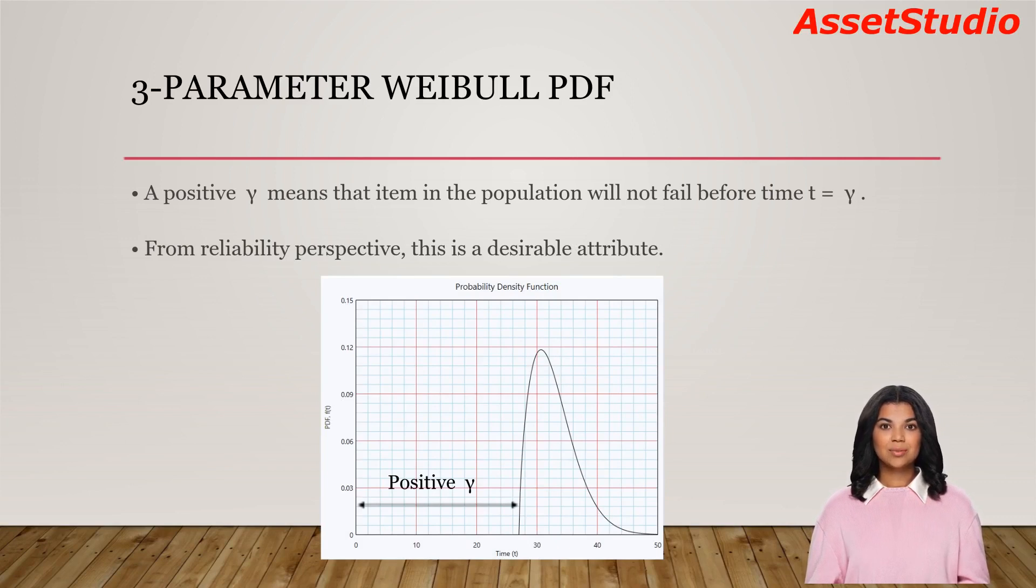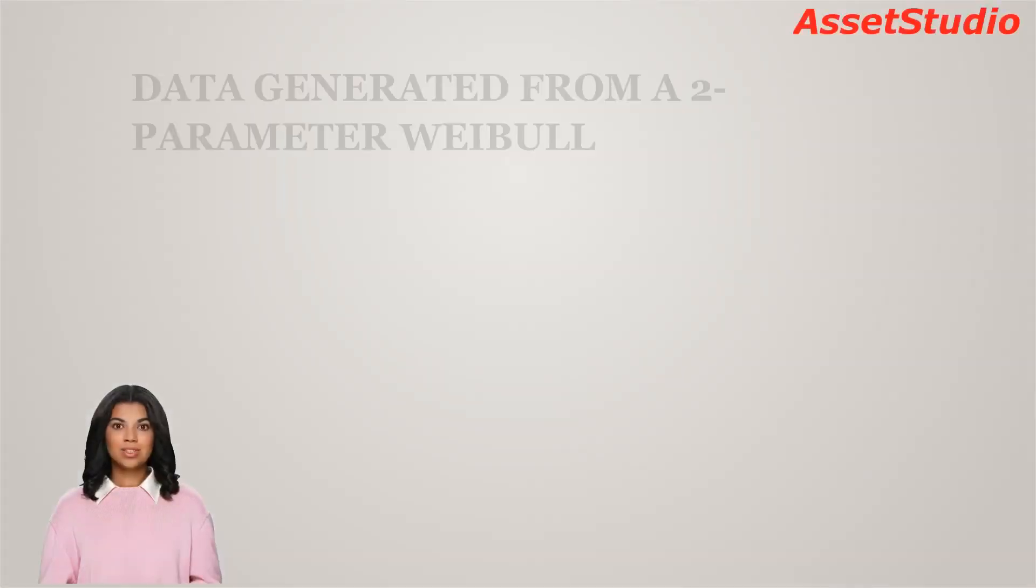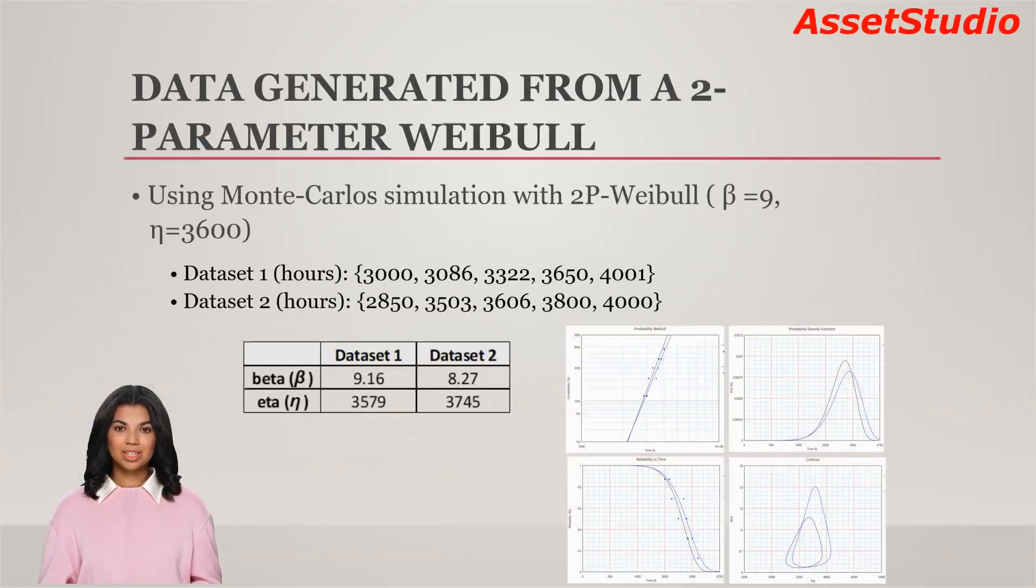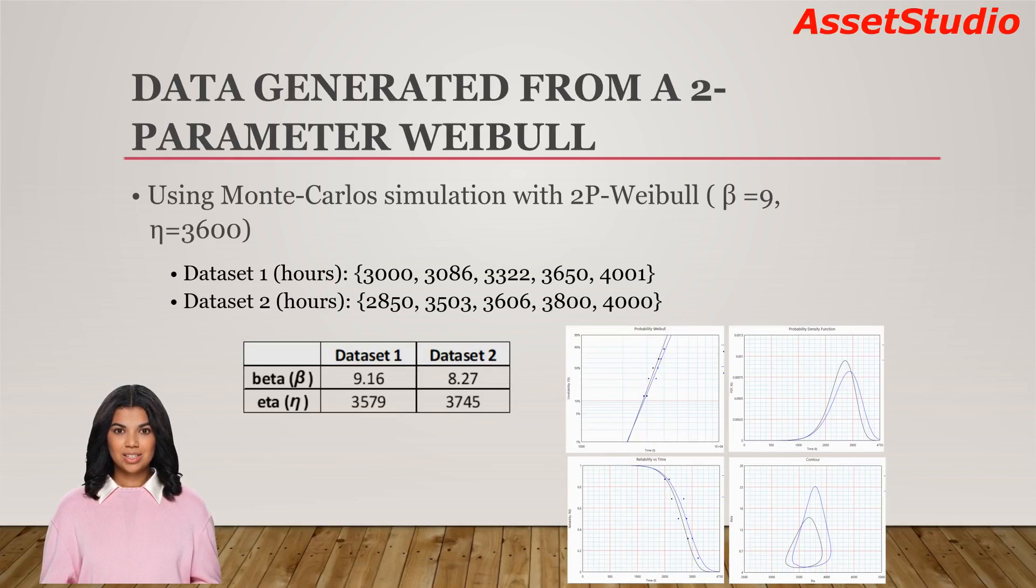What if the gamma is negative? Does it mean that the items from this population can start to fail from a negative time? Note that in reliability engineering, we are only interested in the positive time domain. The main reason for employing the 3-parameter Weibull distribution for your dataset is the belief that a positive gamma value is present within your population, and you think that the analysis can provide you this value.